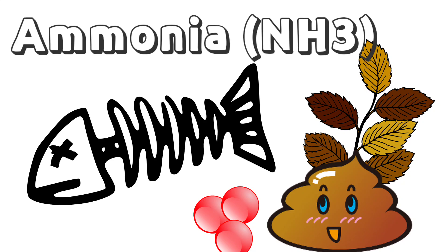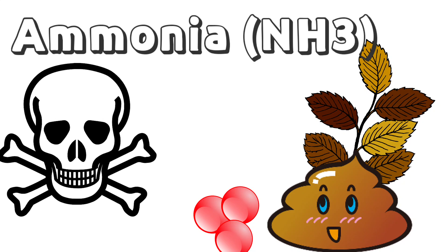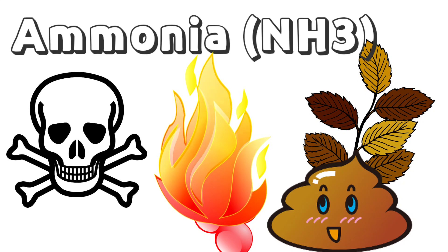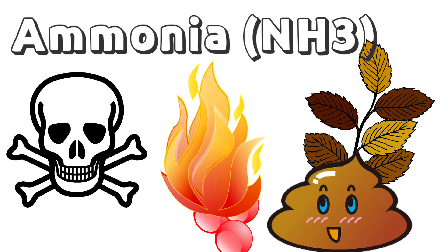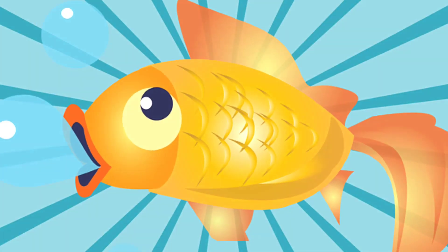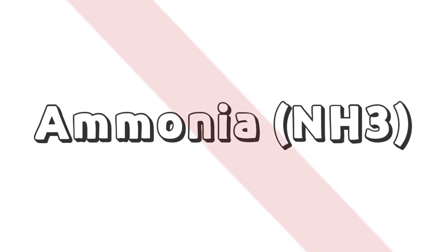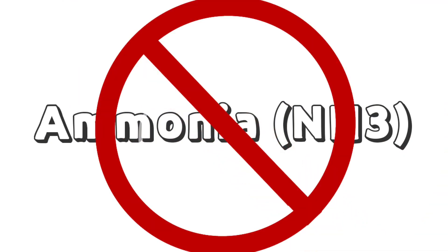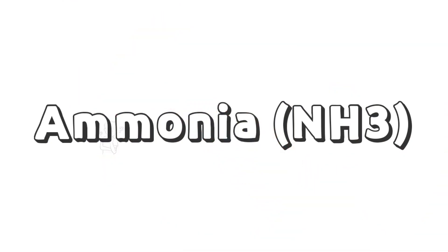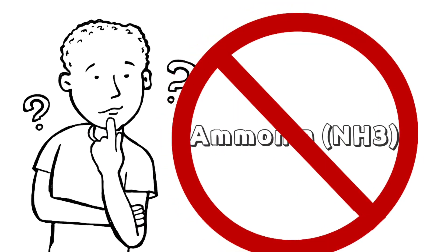Having ammonia in your aquarium is deadly to your fish because ammonia is not only toxic but also caustic. That is why when you have ammonia in your aquarium, your fish is prone to ammonia burn and may die. We don't want our fish to die, so we need to remove ammonia from our aquarium. But the question is: how?